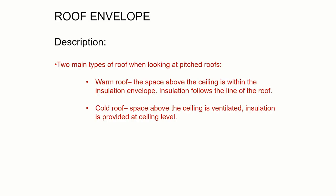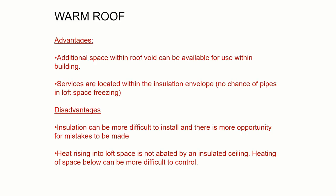The warm roof is essentially where the space above the ceiling — the loft — lies within the insulation envelope. The insulation follows the rafter line, the pitch line of the roof, and that triangle of space in the loft is warm and within the heated space of the house. A cold roof is the opposite: insulation is installed at ceiling level and the space above is cold and ventilated.